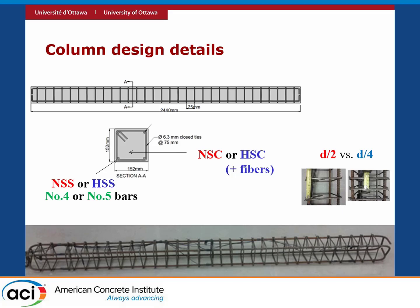These are the column details we tested: approximately 2.4 meters long with a 150 mm by 150 mm cross section. We varied the concrete type — normal-strength concrete (NSC), high-strength concrete (HSC), and HSC with fibers. For the longitudinal steel, we used either normal-strength steel (NSS) or high-strength steel (HSS), with bar sizes of No. 4 (similar to 10M) or No. 5 (similar to 15M). For transverse reinforcement, most columns used 75 mm spacing (D/2), corresponding to moderately ductile seismic design. Some columns used D/4 spacing, which is full seismic detailing with much closer-spaced hoops.